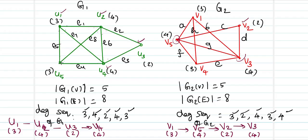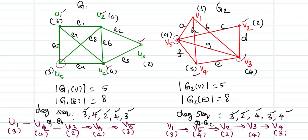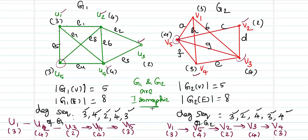U4 has an adjacent vertex U5 of degree 3, and V3's neighbor of degree 3 is V4. We have now established a one-to-one correspondence between the vertex adjacency in G1 and G2. Since this is satisfied, we can finally conclude that G1 and G2 are isomorphic.